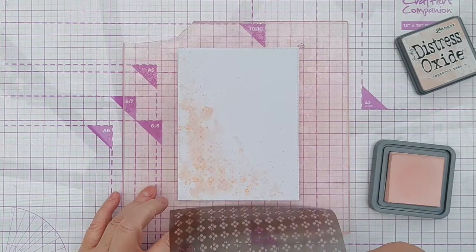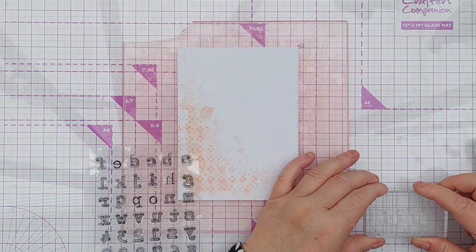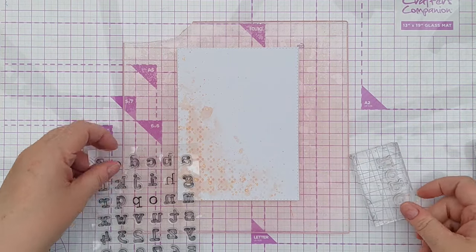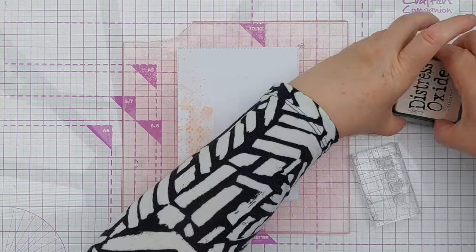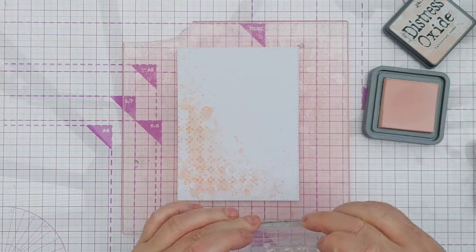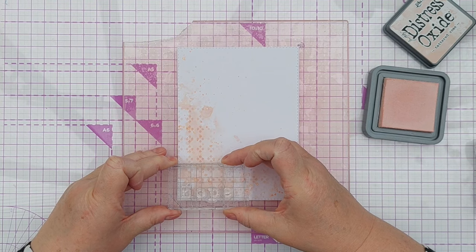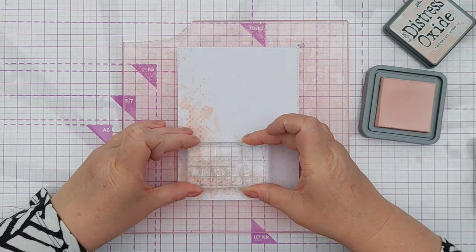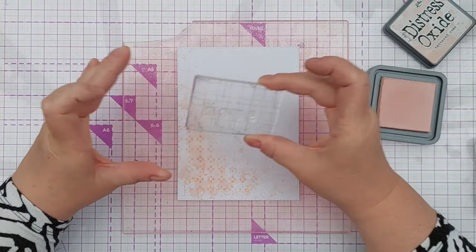As well as that stenciled pattern I wanted to add a bit of text in the background so I used some alpha stamps which I picked up recently from the works. They're a lovely grungy old-fashioned typewriter font and I decided to spell out the word hope.